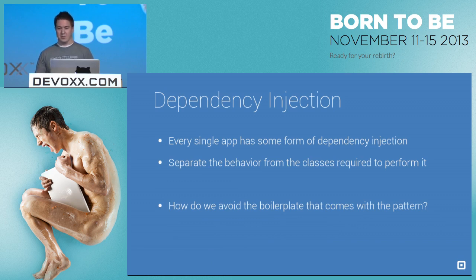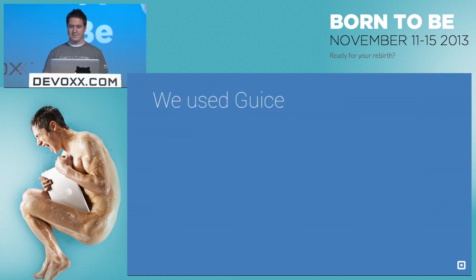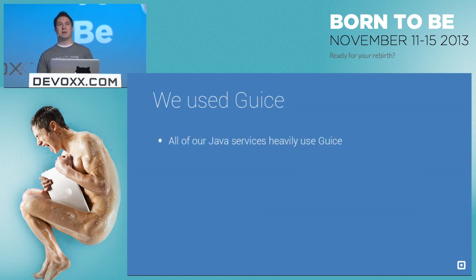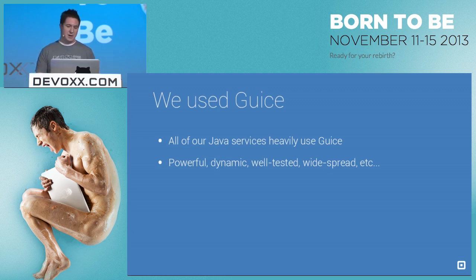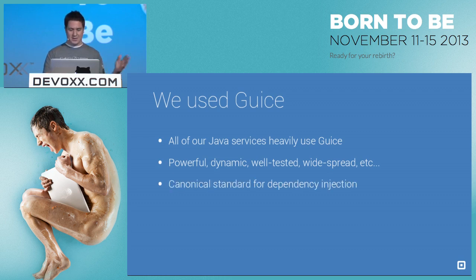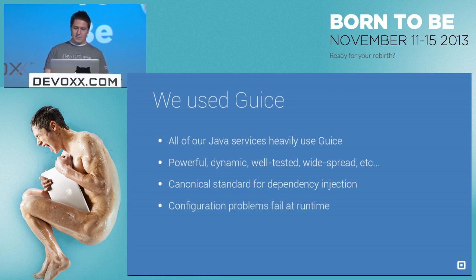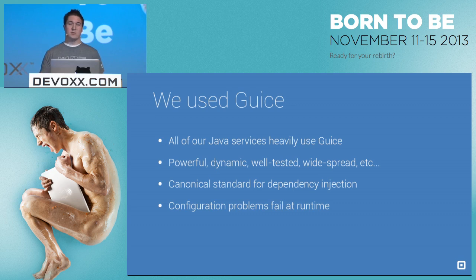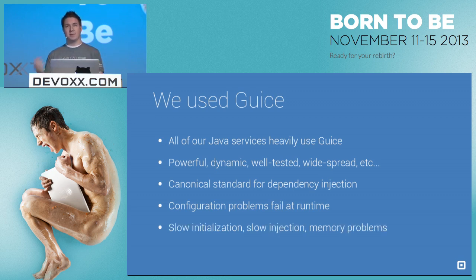So how do we avoid the boilerplate? We used to use Guice — a fairly prominent dependency injection framework. All of our back-end Java services have been using Guice. It's well tested, powerful, dynamic, and pretty much the standard for dependency injection. However, Guice has a couple of problems. One is that any configuration problems will occur at runtime — you might start your app, get a couple screens in, and then realize you didn't provide a dependency properly and your app's going to crash. Additionally, it is very slow to initialize and slow to inject, especially in the scope of Android. There are also certain memory problems it introduces.